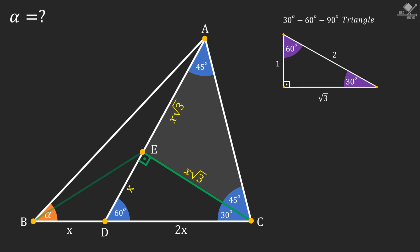For the next step, let's draw a line connecting points B and E. Now we have an isosceles triangle with equal sides of length X.